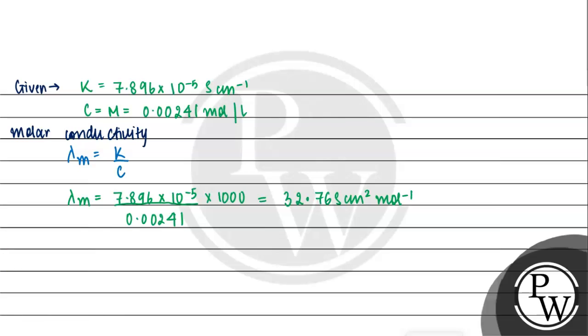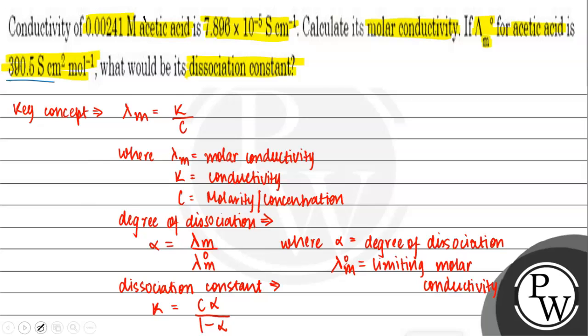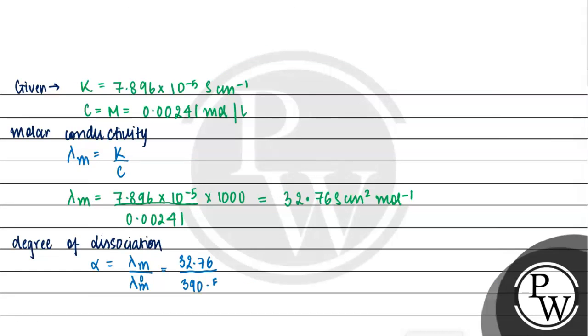Now moving on, we need to calculate degree of dissociation to put in the dissociation constant formula. The formula is alpha equals lambda m divided by lambda m naught, which will be equal to 32.76 divided by 390.5. The units are the same, so this will be equal to 0.084.